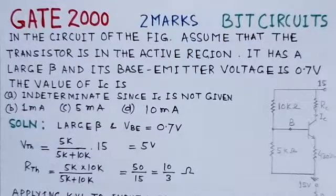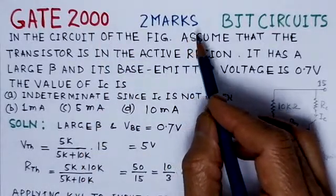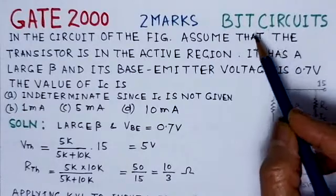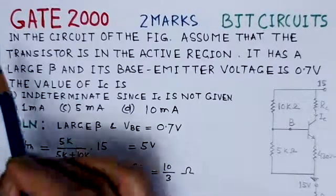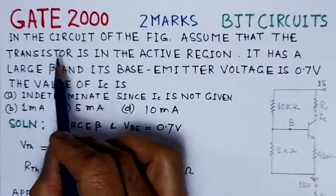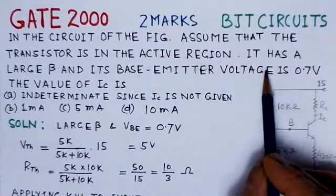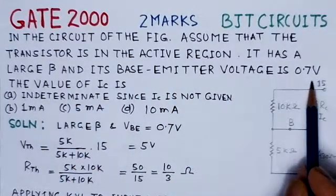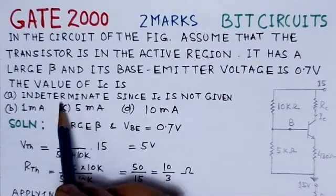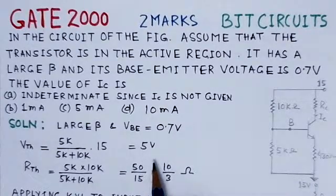The present problem is from GATE 2000, 2 marks, and it's on BJT circuits. We'll read out the problem first and then see the solution. In the circuit of the figure, assume that the transistor is in the active region, it has a large beta, and the base-emitter voltage is 0.7 volts. The value of IC is to be found from four given options.